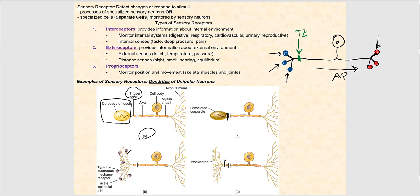These corpuscles of touch respond to light touch and light pressure. When pressure is applied to this dendrite — this corpuscle of touch or Meissner's corpuscle, which is the dendrite of this unipolar neuron — it generates a graded potential. That graded potential travels to the trigger zone, where an action potential forms and then moves toward the synaptic knob.